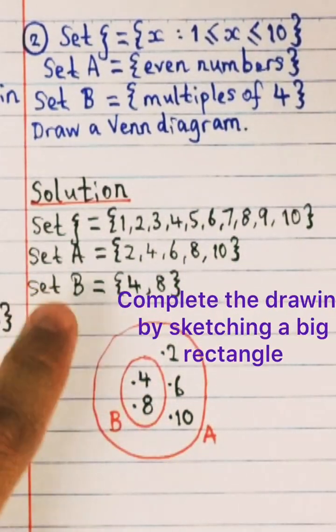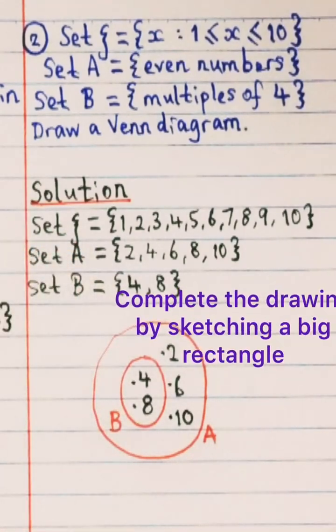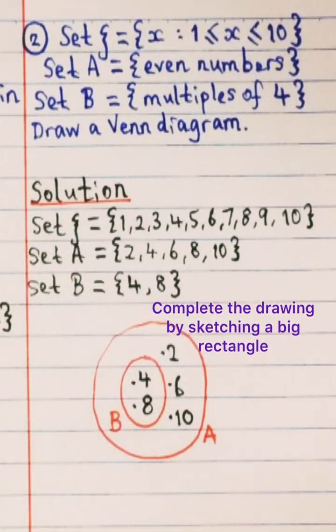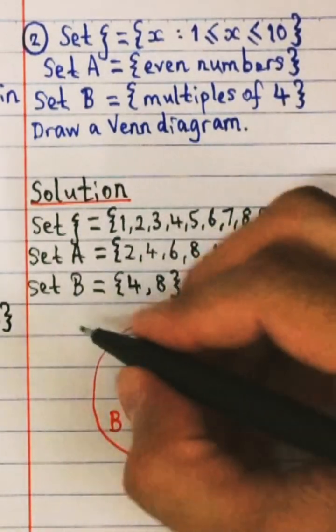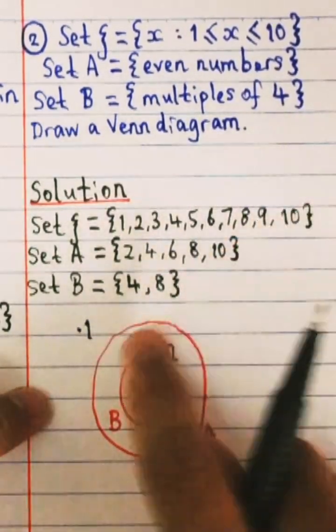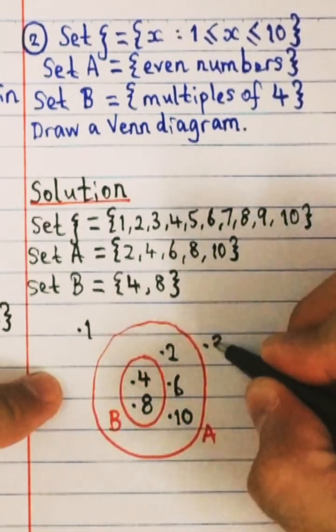And then you got 6 and 10. So this is your set A everything. So if you draw another circle, this is your set A. Okay finally because you need to draw your bigger rectangle to represent your universal set. So what we do, whatever number left, you're gonna write outside. So 1 is not there, you write outside. 2, 3 is not there, you write outside.